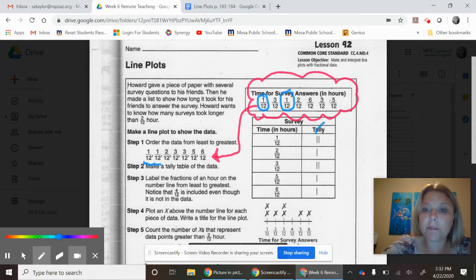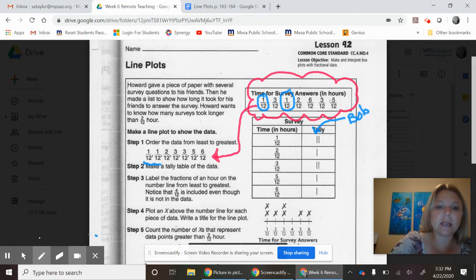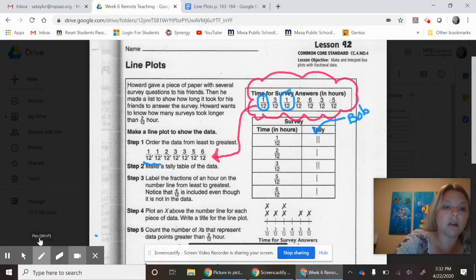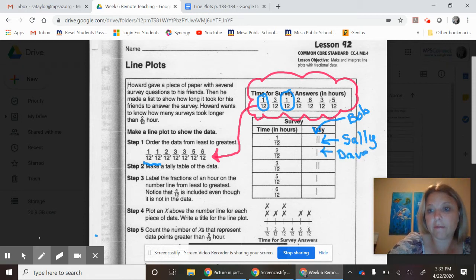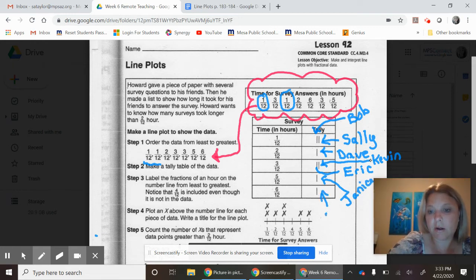You can look at these tallies as people's names if it helps you. For example, this first tally mark right there could be Bob, and that second tally mark could be somebody else like Sally. Then you could do another one - this one could be Dave. You could do another one, that one could be Eric. And another one could be Kevin. This person could be Janice, and then this person could be Aaron.